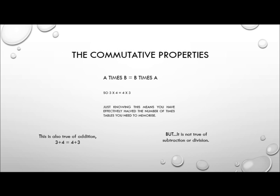We'll start with the commutative property. Think of a commuter going from A to B and back from B to A again. Well, A times B is the same thing as B times A. So if we had something like 3 times 4, that's the same as 4 times 3. Just knowing that means you have effectively halved the number of times tables you need to memorise. This also works for addition — 3 plus 4 is the same as 4 plus 3. But you should know this does not work for subtraction and it does not work for division.